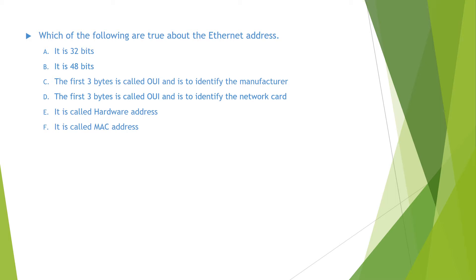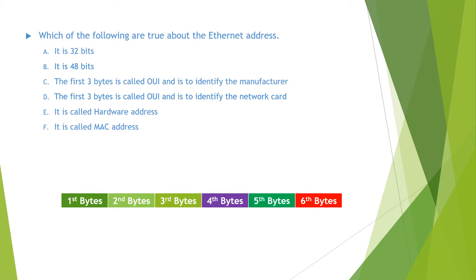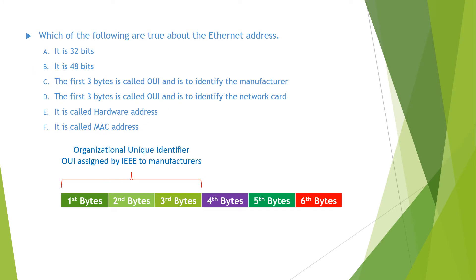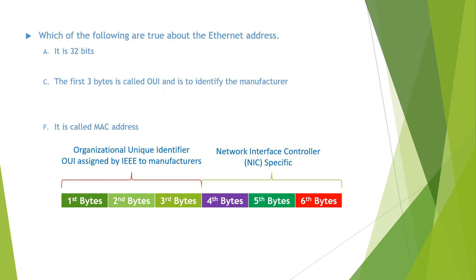To answer this question, you need to remember that the Ethernet address is also called MAC address and it has six bytes. One byte equals 8 bits, so it is 48 bits. The first three bytes is called OUI and is to identify the manufacturer. The last three bytes is to identify the network cost. So the answer is A, C, and F.